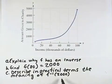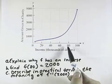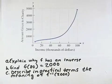f inverse of 2,000 would represent the income of someone who gives $2,000 to charity. And so that means f inverse of 2,000 represents the income of $80,000 for someone who gives $2,000 to charity.